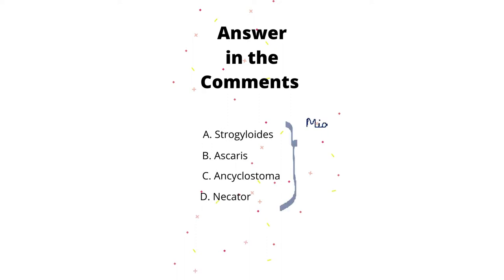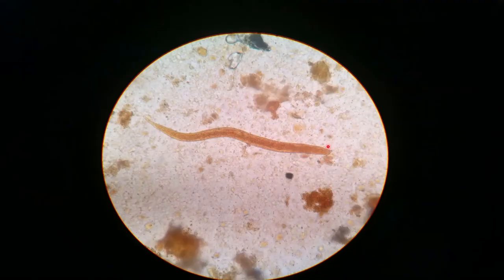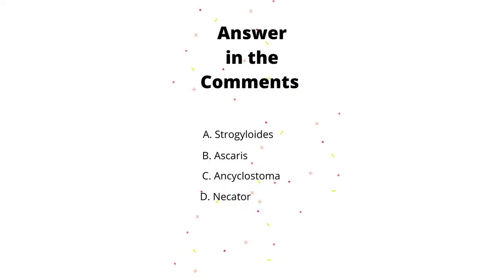All the given options are examples of migrating larva and may appear in sputum, causing pneumonitis or Löffler syndrome. If we see very carefully, we can see a double bulb esophagus in the given picture of the larva. Out of the given four options, Strongyloides and Ankylostoma have a double bulb esophagus.